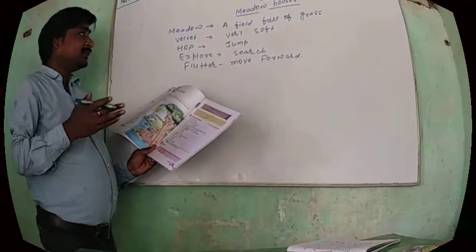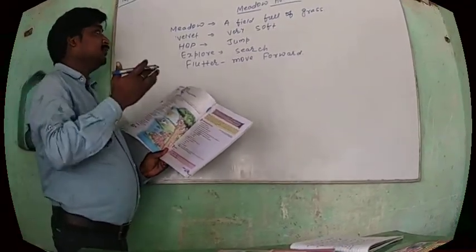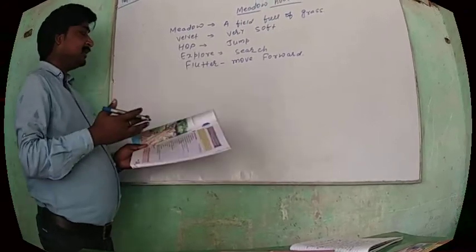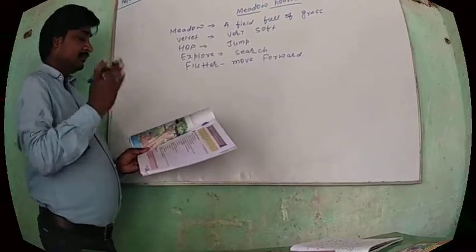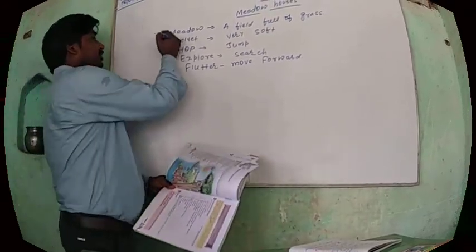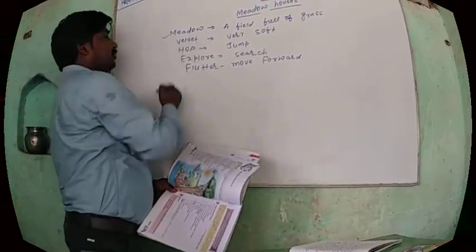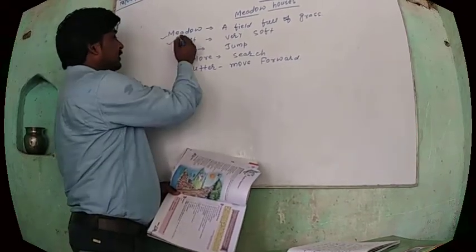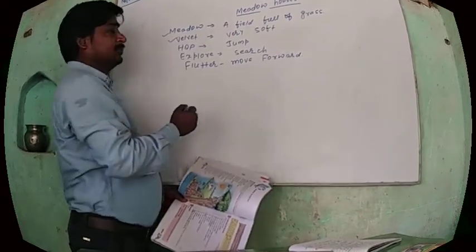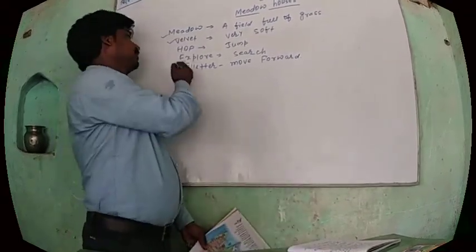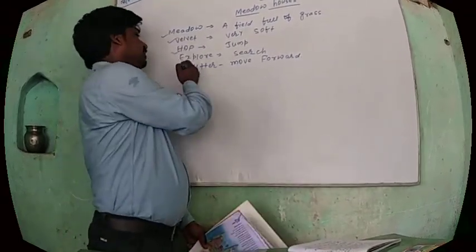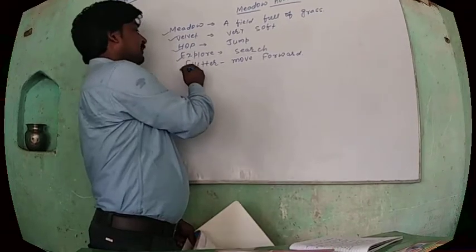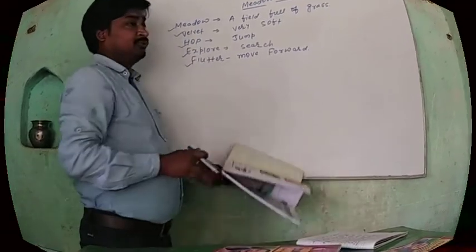First, let us know some words from this poem. Meadow means a field full of grass. Velvet means very soft. Hop means jump. Explore means search. And flutter means move forward.